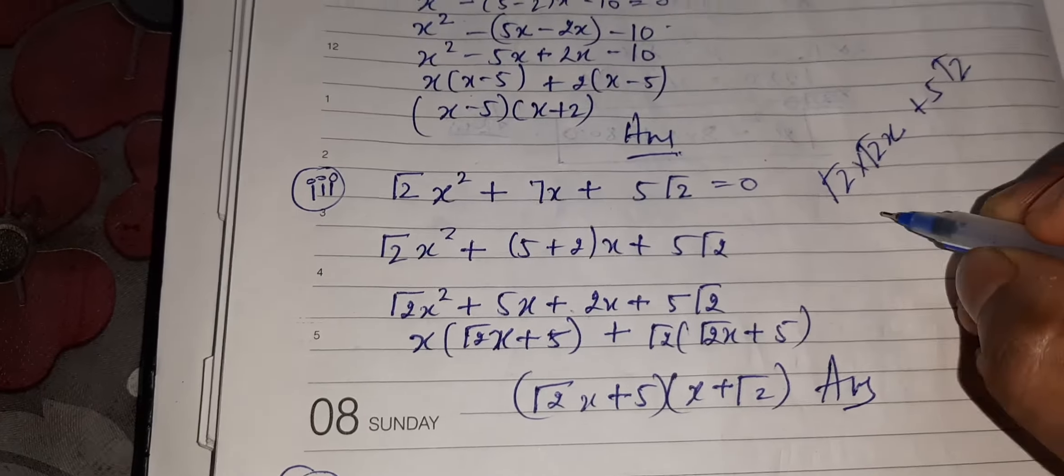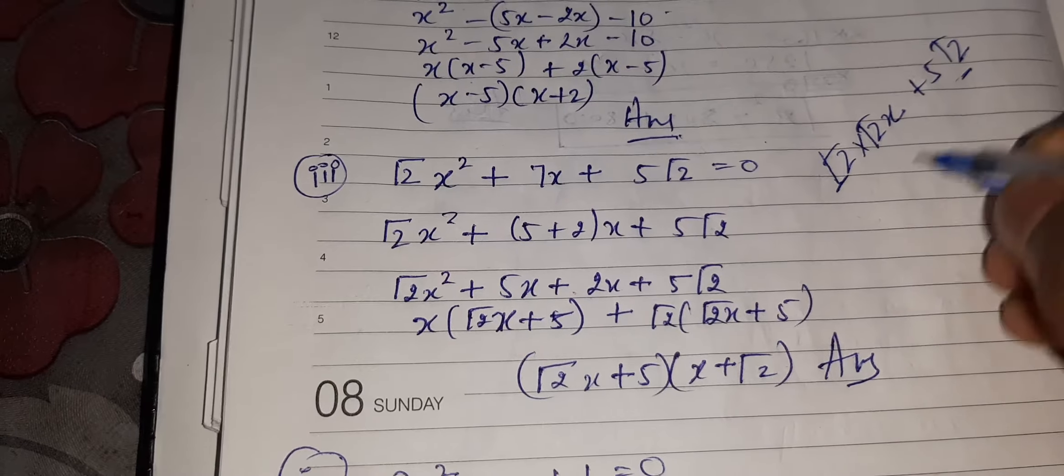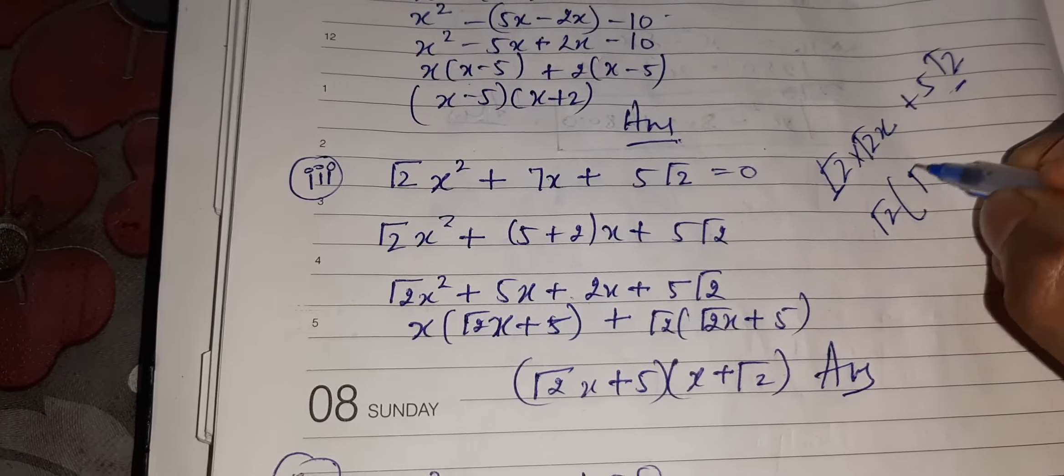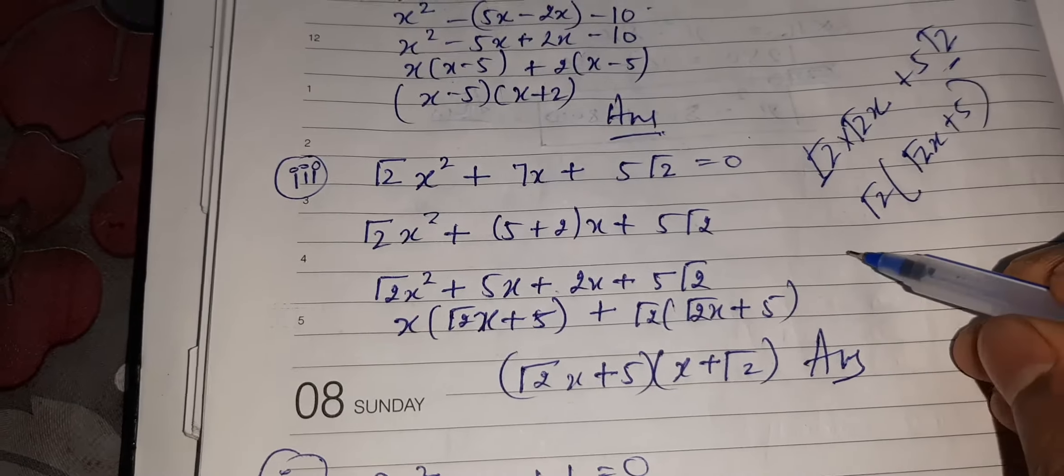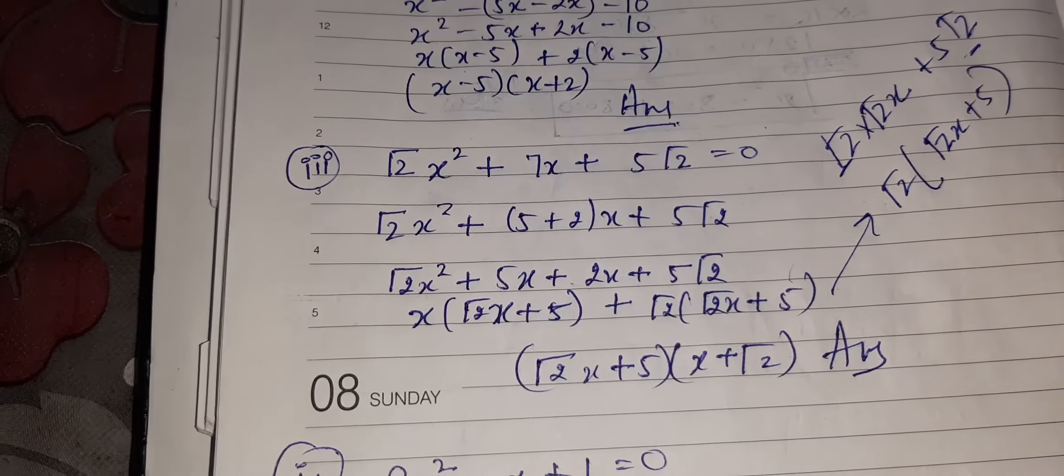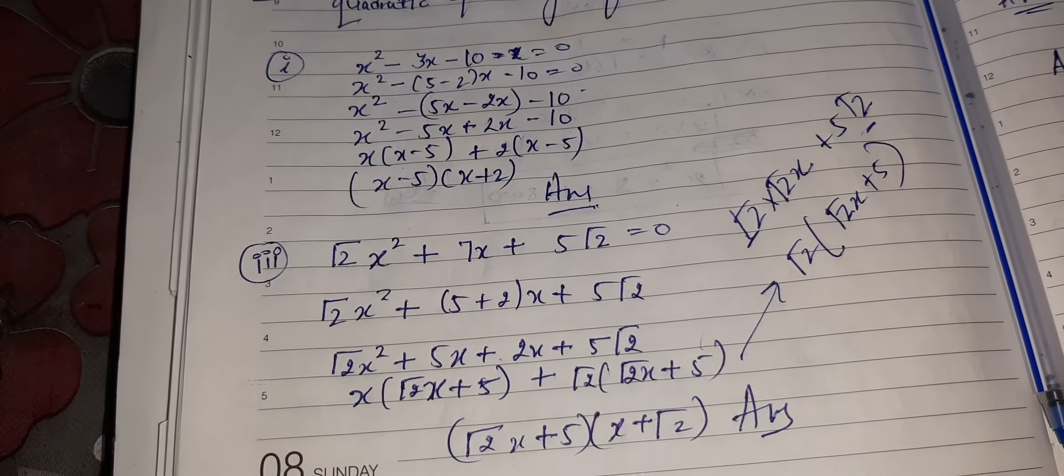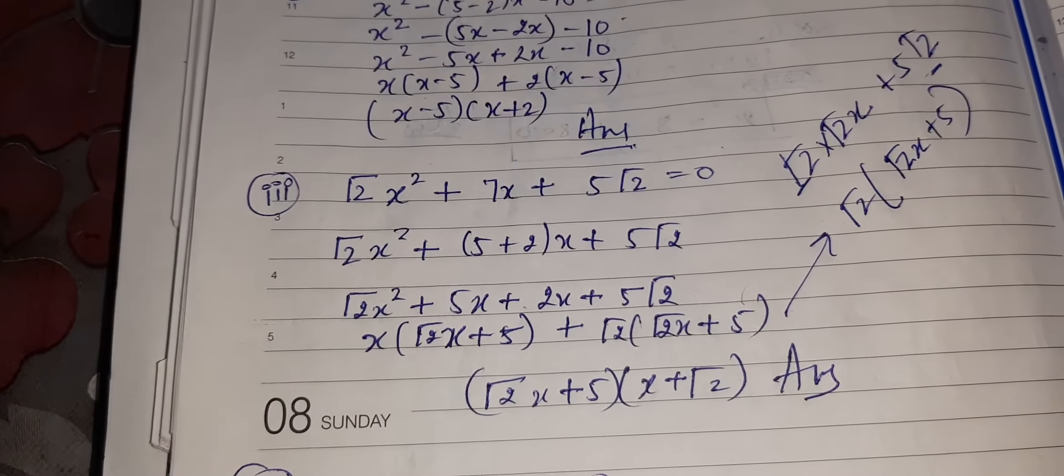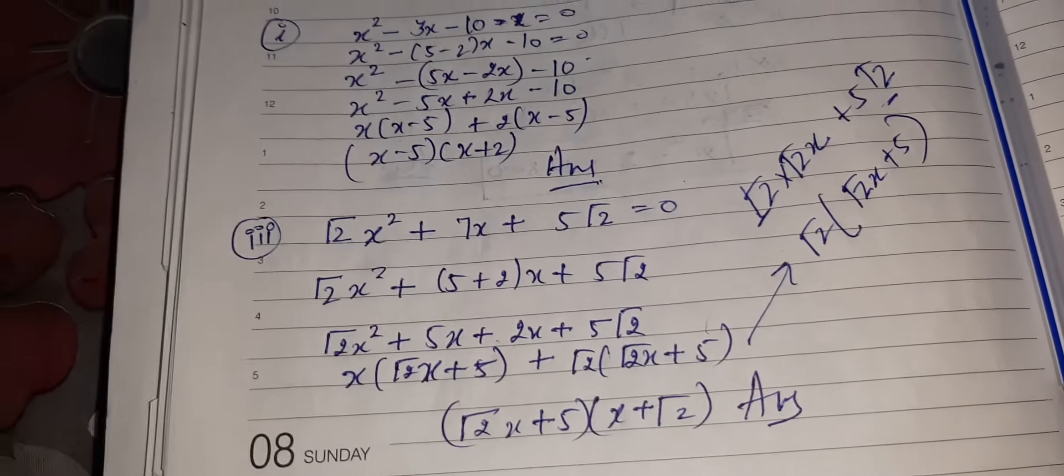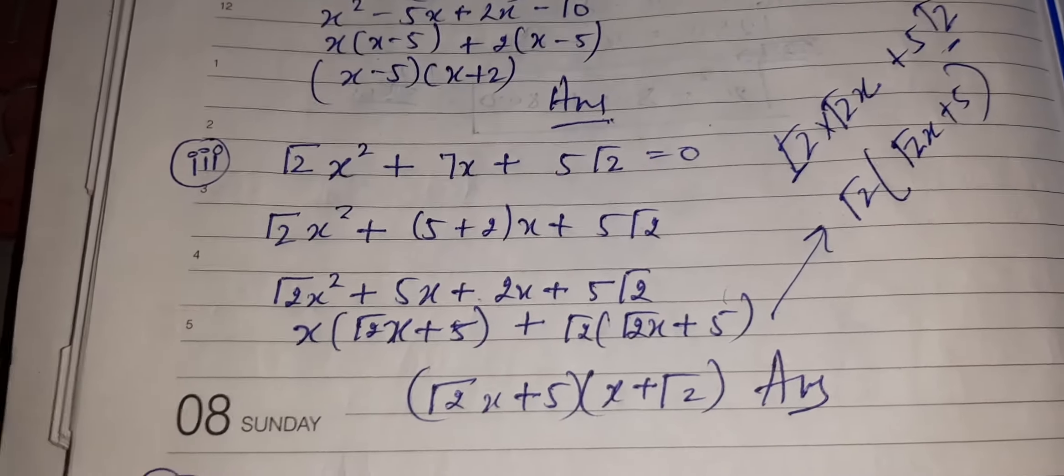So √2 will be common. What is left? √2x + 5. This part. Got it? Please see it very carefully. It is a very important question. Now I have taken it as common and I have got the answer.